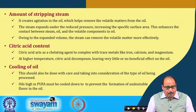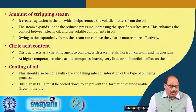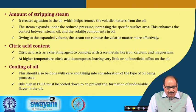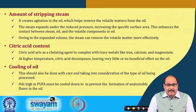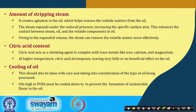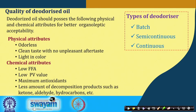Due to the expanded volume under reduced pressure, steam can remove volatile matter more effectively. The amount of stripping steam is therefore important. Citric acid in the appropriate amount should be used as a chelating agent to complex trace metals like iron, calcium, and magnesium. At higher temperatures, citric acid decomposes, leaving very little or no chelating effect. Cooling of the oil is also an important operation and should be done carefully considering the type of oil being processed. Oils high in certain fatty acids must be cooled appropriately to prevent formation of undesirable components.